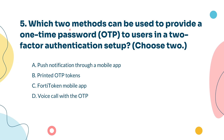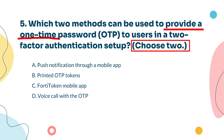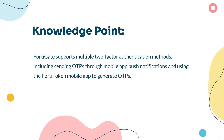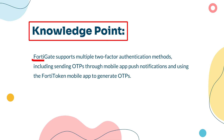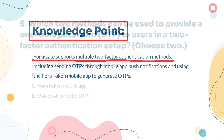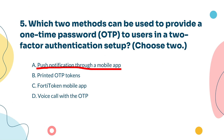Question 5: Which two methods can be used to provide a one-time password to users in a two-factor authentication setup? FortiGate supports a couple of ways to send OTPs in a two-factor setup. You can use a mobile app that pushes notifications with the OTP, or have users generate OTPs with the FortiToken app. Both methods make sure that only the right person gets access. Mobile apps can send OTPs to users via push notifications — therefore, Option A is correct. The FortiToken mobile app allows users to generate and receive OTPs for two-factor authentication — therefore, Option C is also correct.